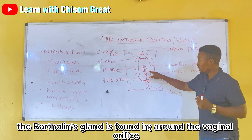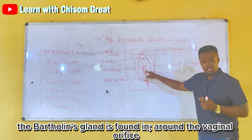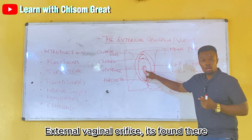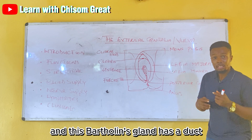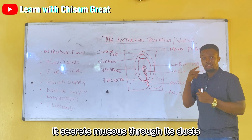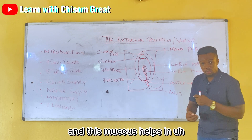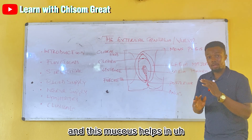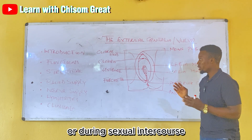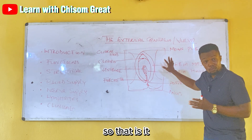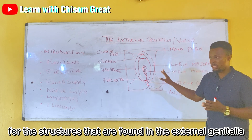There is another structure known as the Bartholin's gland. The Bartholin's gland is found around the external vaginal orifice. It secretes mucus through its duct, and this mucus helps in lubricating the vagina during foreplay or sexual intercourse.